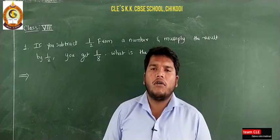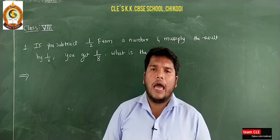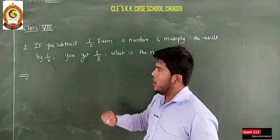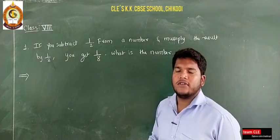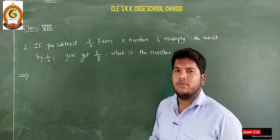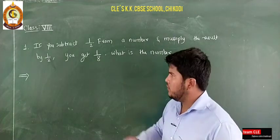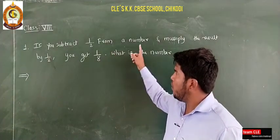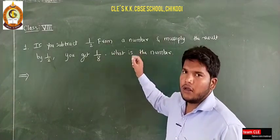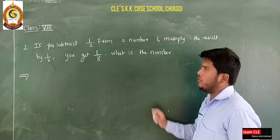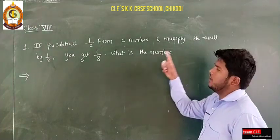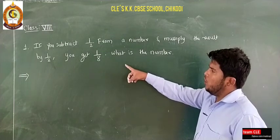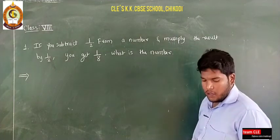In this session I am going to solve exercise number 2.2. The first question says: if you subtract 1/2 from a number and multiply the result by 1/2, you get 1/8. What is the number?